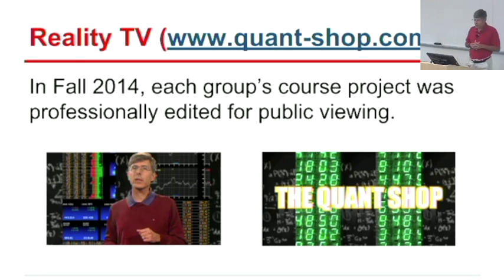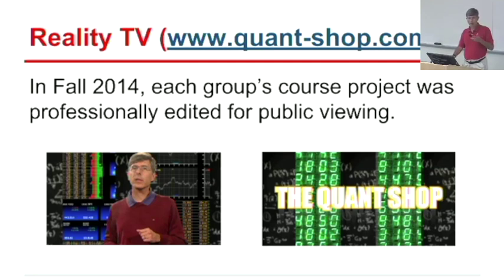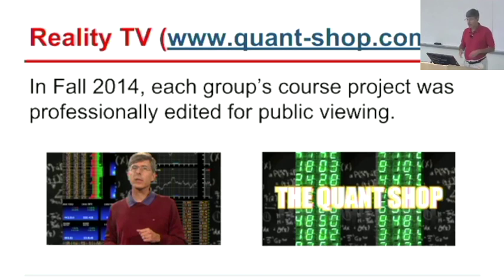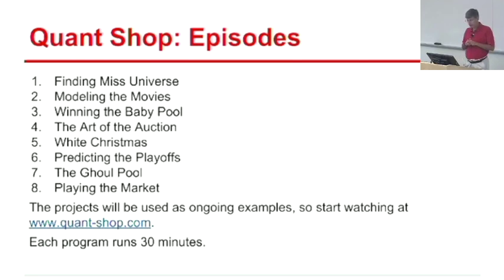Two years ago I taught a preliminary version of this course and we did the projects in a different way — every group predicted future events. I gave each group a specific challenge: who was the next celebrity to die, who was going to win Miss America, who was going to win the Super Bowl. Each group was assigned to build a model for doing this. We gave each group a camera to document their model-building process. We've edited this to create a series of programs we call the Quant Shop. The eight episodes are at www.quantshop.com. Homework one will involve watching some of these episodes.